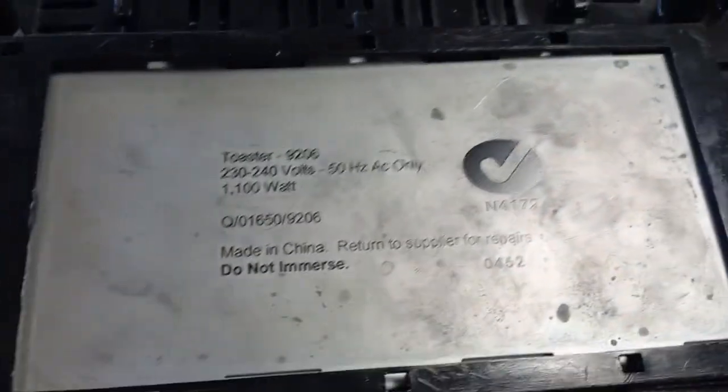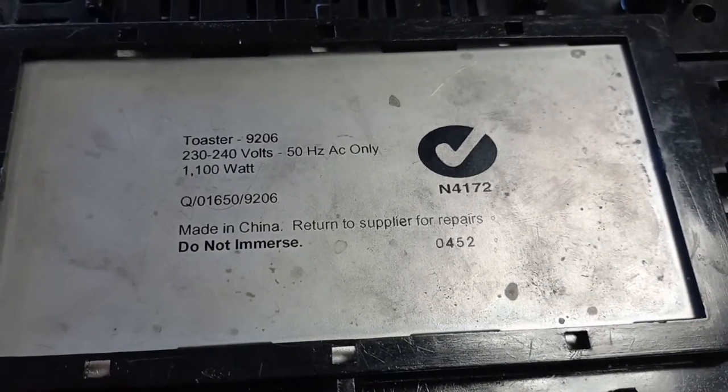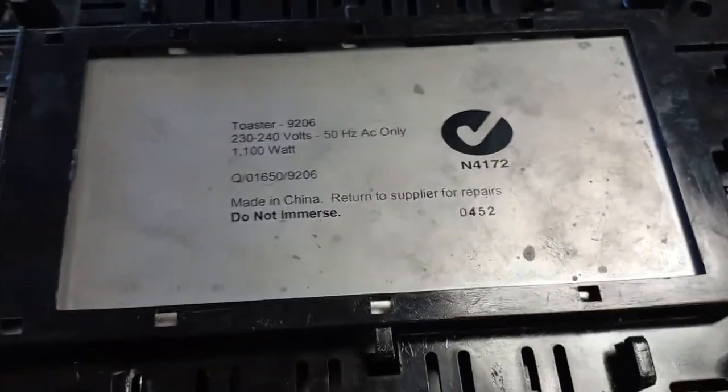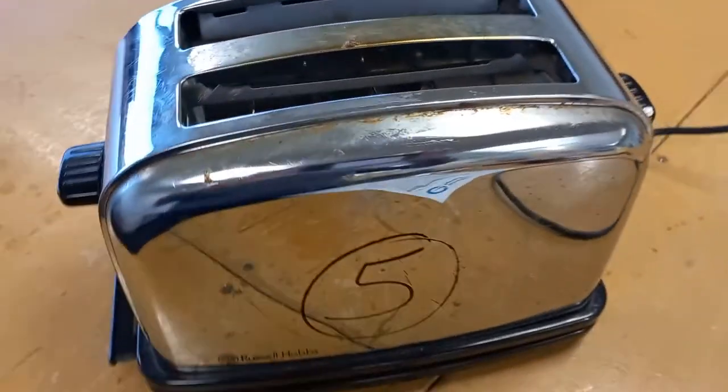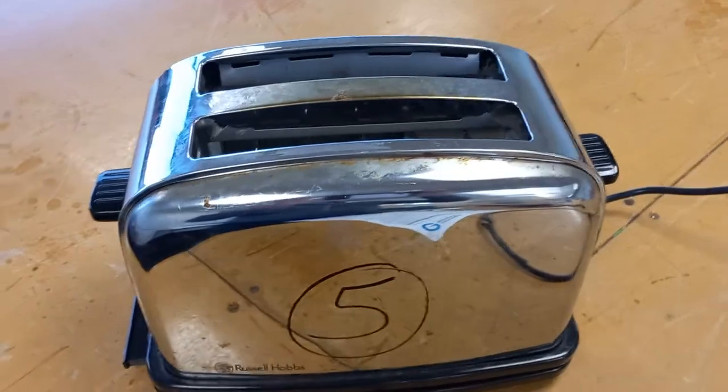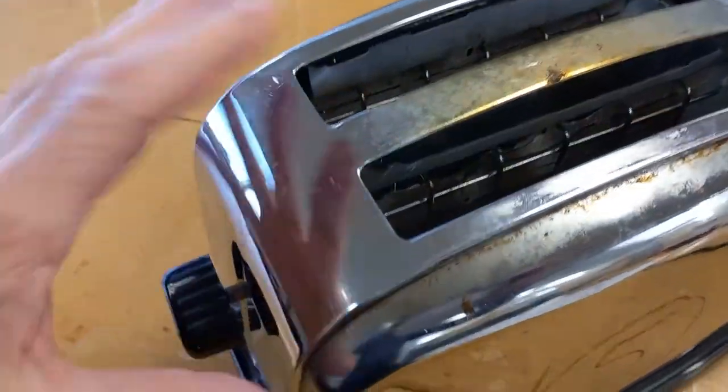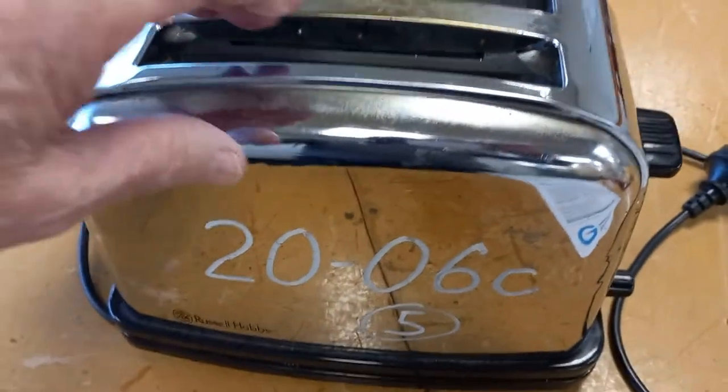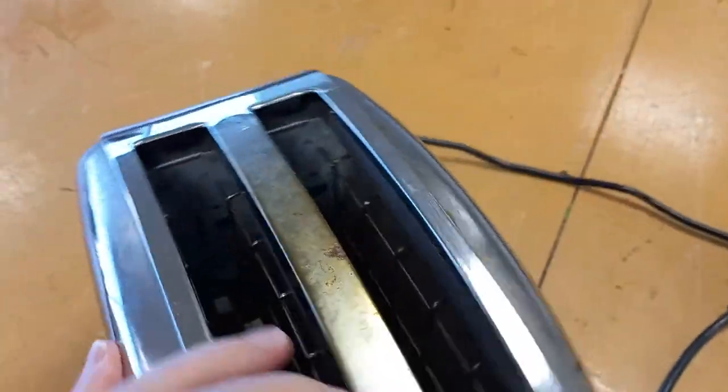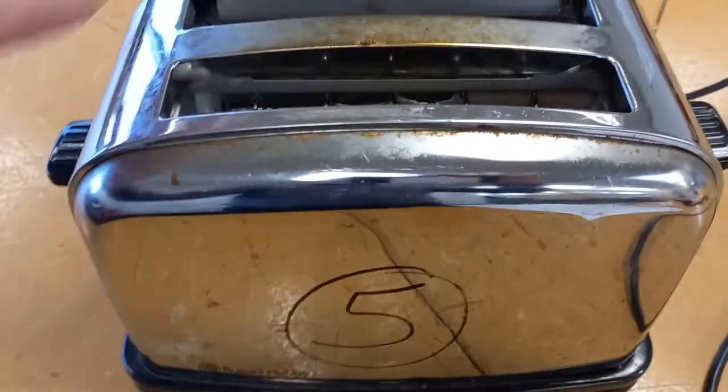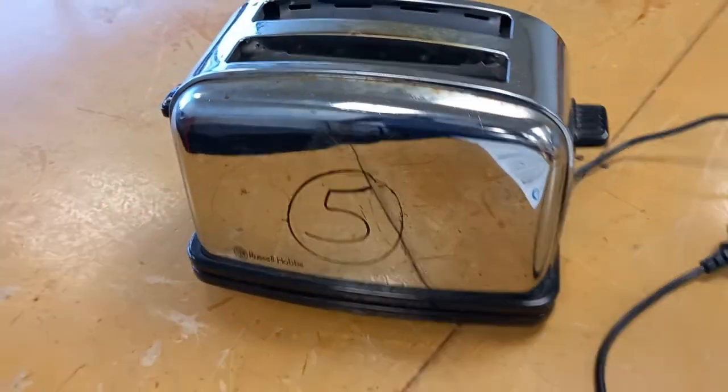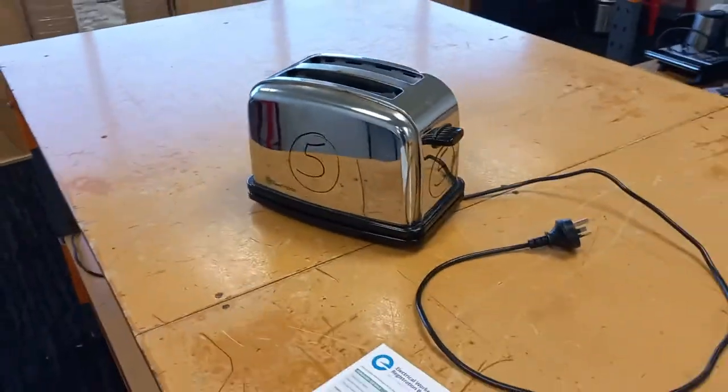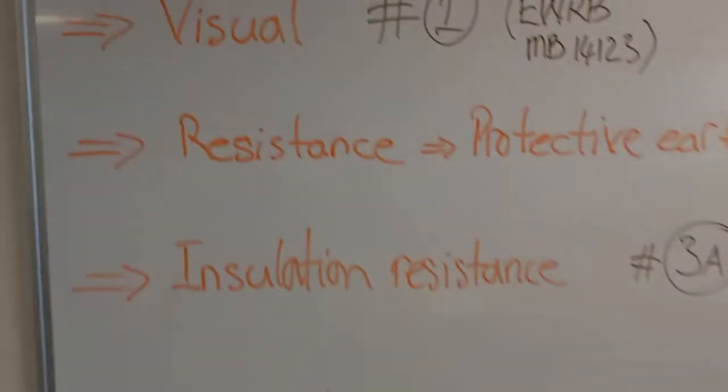This is the nameplate on this particular Class 1 appliance. Then I have a good look at the case, noting if there's any missing covers, missing guards, or anything which would allow for accidental contact with live parts. That is the visual inspection of the Class 1 appliance.